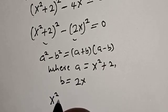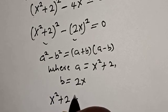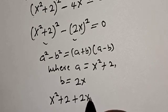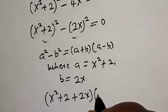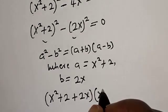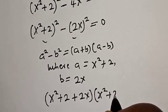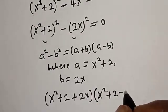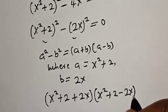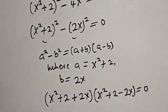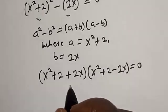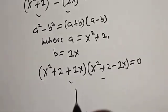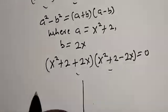We have (s² + 2 + 2s) multiplied by (s² + 2 − 2s) equal to 0. Now we have two cases here.